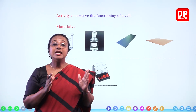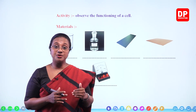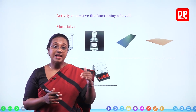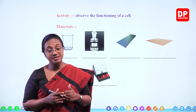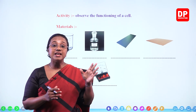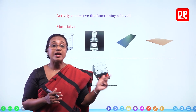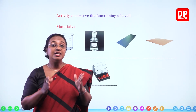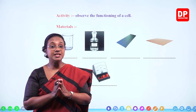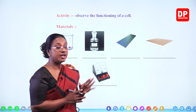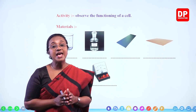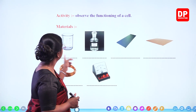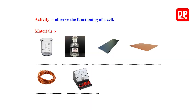If we can make the exchange of electrons — zinc losing electrons and H⁺ taking up the electrons — happen through an external conductor, there will be electricity generated. That is what we are trying to understand here. To understand that, we will do this activity: observe the functioning of an electrochemical cell.